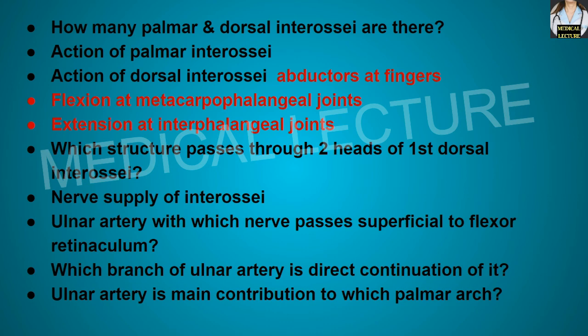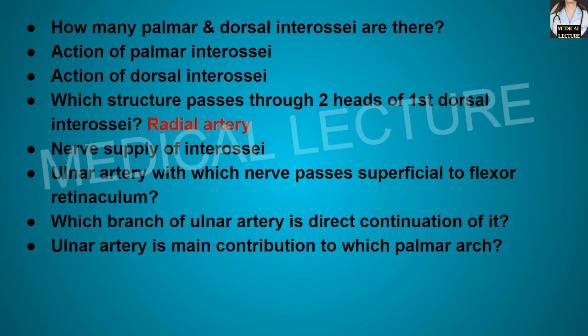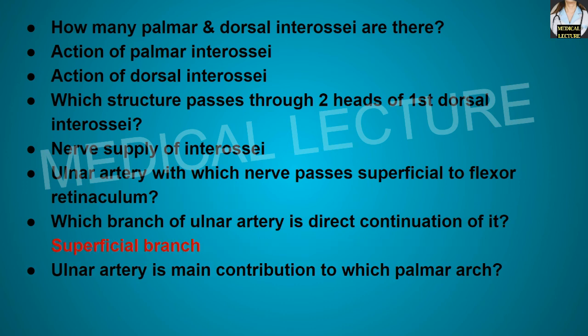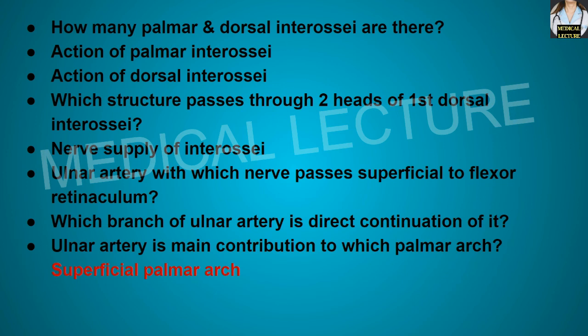Which structure passes between the two heads of the first dorsal interosseous? The radial artery. What is the nerve supply of the interossei? The ulnar nerve. Ulnar artery with the ulnar nerve passes superficial to the flexor retinaculum. Which branch of the ulnar artery is the direct continuation of it? The superficial branch of the ulnar artery is the direct continuation. Ulnar artery is the main contribution to the superficial palmar arch.